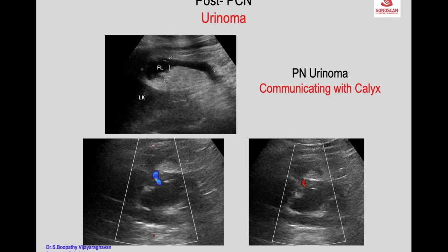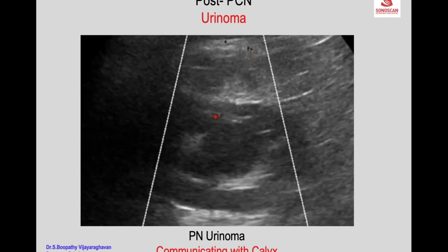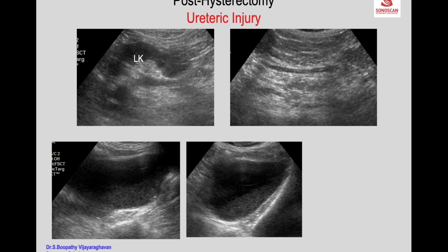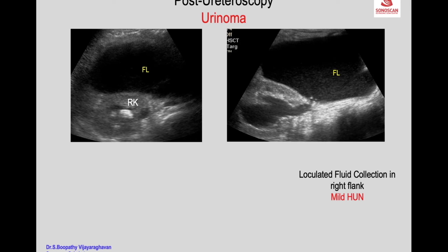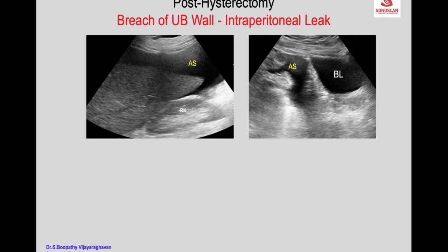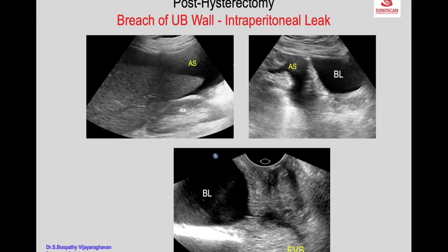We come to the calyx and the urinoma with a press-release technique of the probe, which can be seen on the scan. There is mild hydronephrosis of the left kidney and mild dilatation of the ureter. When you trace the ureter there is a loculated fluid collection anterior to the kidney in the right flank, with the collecting system and ureter dilated up to the collection.